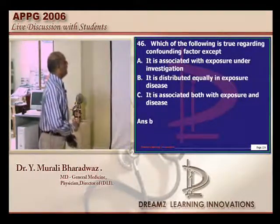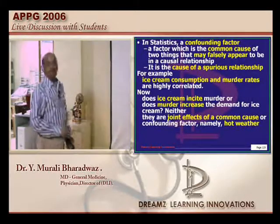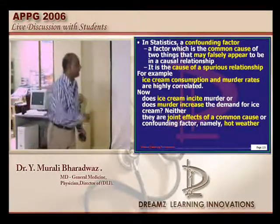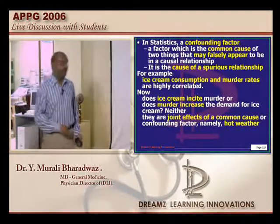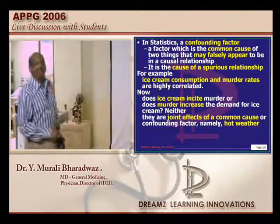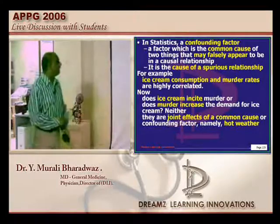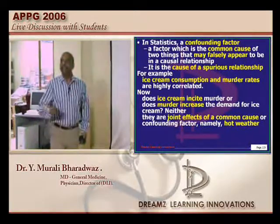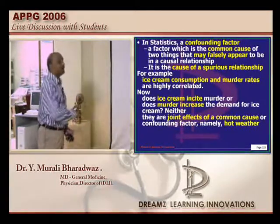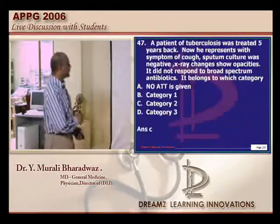A confounding factor is associated with the exposure under investigation and with the disease, but it is not distributed equally in the two groups and can have an indirect impact on the occurrence of the disease. For example, ice cream consumption and murder rates are highly correlated — not because ice cream incites murder, but because both things happen more commonly in summers. Ice cream and murder cannot be implicated just because they are both increasing in a given city.